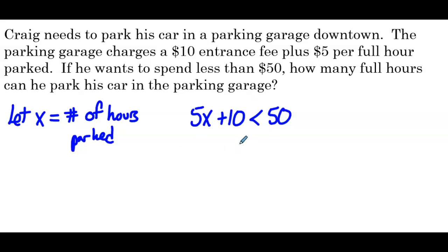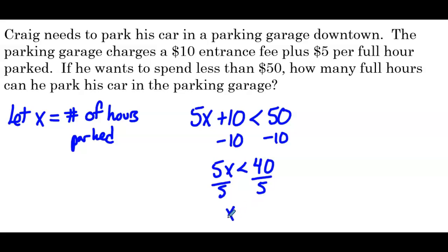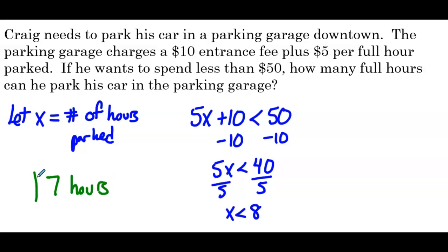So we want 5x plus 10 to be less than 50. Now that we have our inequality set up correctly, we can subtract 10 from both sides. We have 5x is less than 40. Divide both sides by 5 — x is less than 8. So the number of hours Craig can park needs to be less than 8. The question asks how many full hours he can park, so the number of full hours less than 8 would be 7. He can park for 7 full hours and pay less than $50.